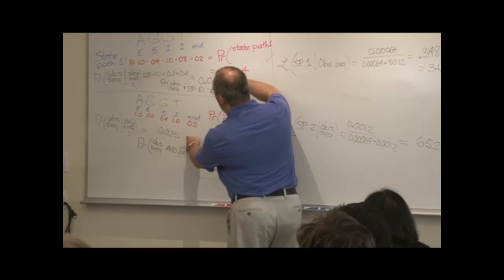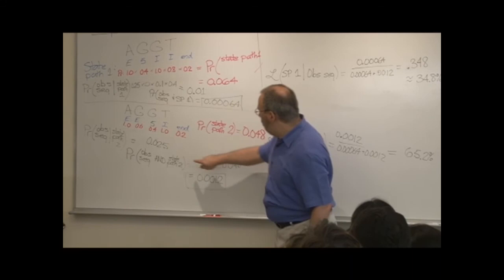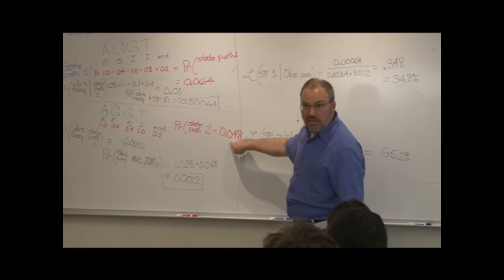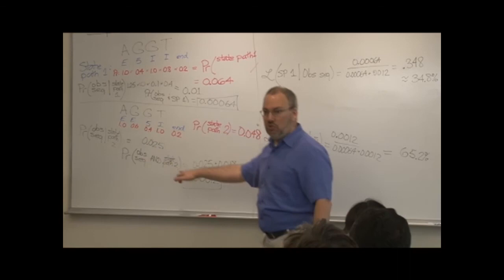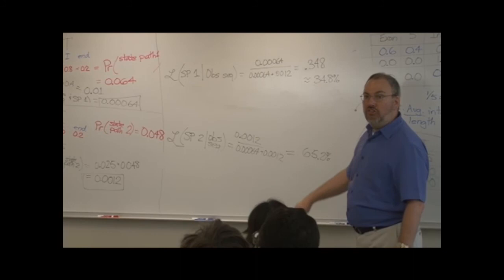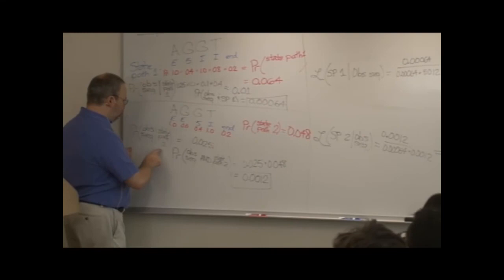In the end, we know that that sequence actually happened, but the reason we need to do that calculation is because you're seeing that even though state path two has a lower intrinsic probability, because under that, if that state path occurred, you're likelier to get the observed sequence. We have to take that into account and you see that the effect is that's the likelier state path.